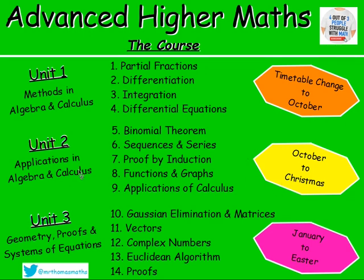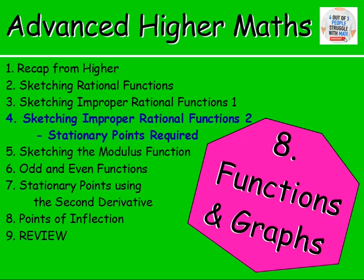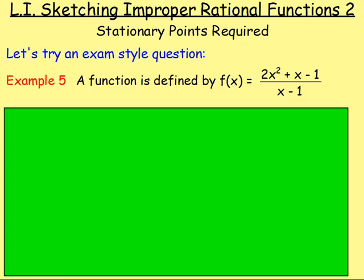It's time for maths with Mr Thomas. We're starting off with example 5, which is another example on sketching improper rational functions. This is an exam-style question because it's split up into parts a, b, c, d and so on. A function is defined by f(x) equals 2x squared plus x take away 1 over x take away 1.